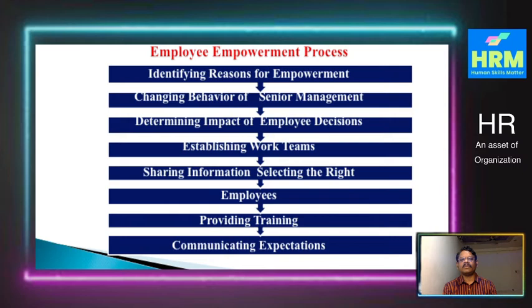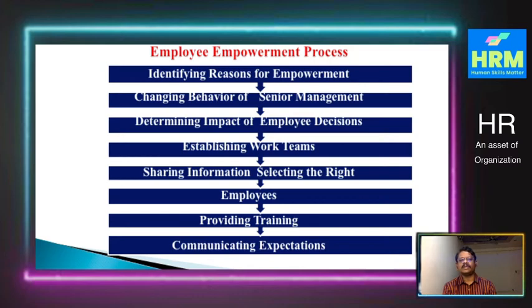When employees are empowered, they will be taking decisions independently, so one has to analyze whether those decisions will affect the organization negatively or positively. The next step is establishing work teams — you establish teams at the next level and determine what type of power and authority you are going to invest in others, such as sharing information and selecting the right individuals. You then give employees a complete idea of which aspects and areas they are empowered in, providing training so they understand where they have the freedom to take decisions. Finally, communicating expectations — while empowering, you let employees know what is expected of them.